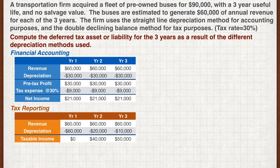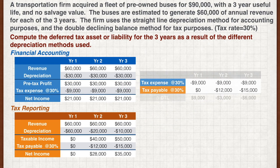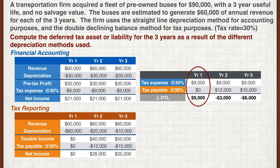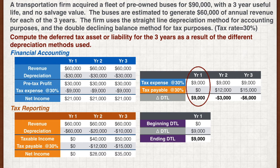Deducting the depreciation from the revenue, we get taxable income of $0, $40,000, and $50,000, which means the tax payable is $0 for the first year, $12,000 for the second, and $15,000 for the third. The temporary difference is the difference between the tax expense and the tax payable. In the first year, the firm reports $9,000 tax expense but the payable is only $0. This means the company is paying less tax than it actually should. Since this will reverse in the future, we create a deferred tax liability of $9,000 in the first year.